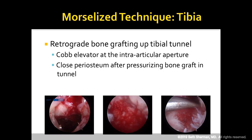Although it seems straightforward, femoral grafting can be technically challenging to get right. On the tibia, we use retrograde bone grafting up the tunnel, typically using a Cobb elevator at the intra-articular aperture, then closing the periosteum after pressurizing the bone graft in the tunnel. This tends to be fairly straightforward.